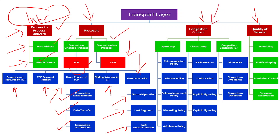Coming to the third main category — congestion control — we are going to discuss open loop congestion control and closed loop congestion control. Under open loop, we will see different policies: retransmission policies, windowing policies, acknowledgement policies, discarding policies, and admission policies. Under closed loop congestion control, we will discuss methods called back pressure, choke packet, implicit signaling, and explicit signaling. Finally, we will discuss congestion control in TCP — also called general congestion control in TCP — which is very important.